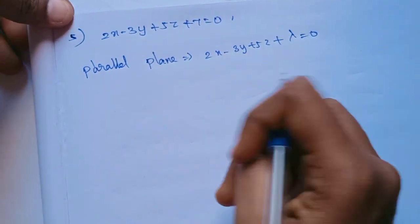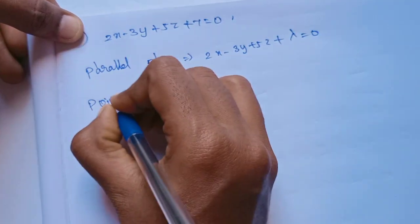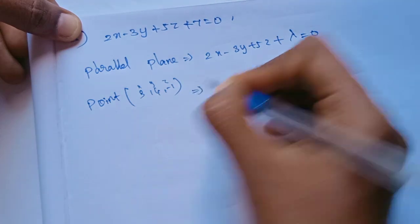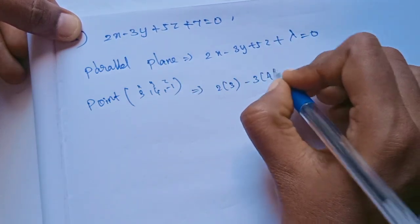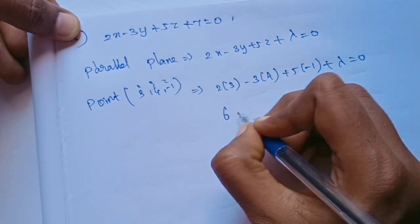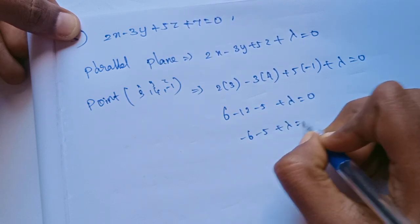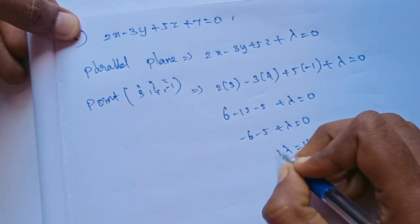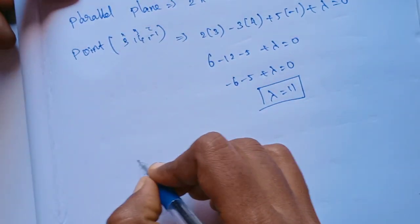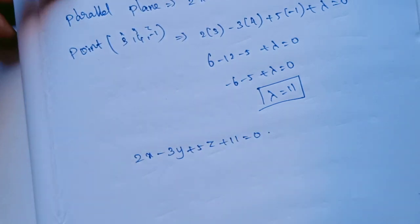Since the plane is parallel, the xyz values stay the same and only the constant changes. So the point (3, 4, -1) must satisfy the new plane equation. We substitute: 2 into 3, minus 3 into 4, plus 5 into minus 1, plus lambda equals 0. That gives us 6 minus 12 minus 5 plus lambda equals 0, so minus 11 plus lambda equals 0, meaning lambda equals 11.